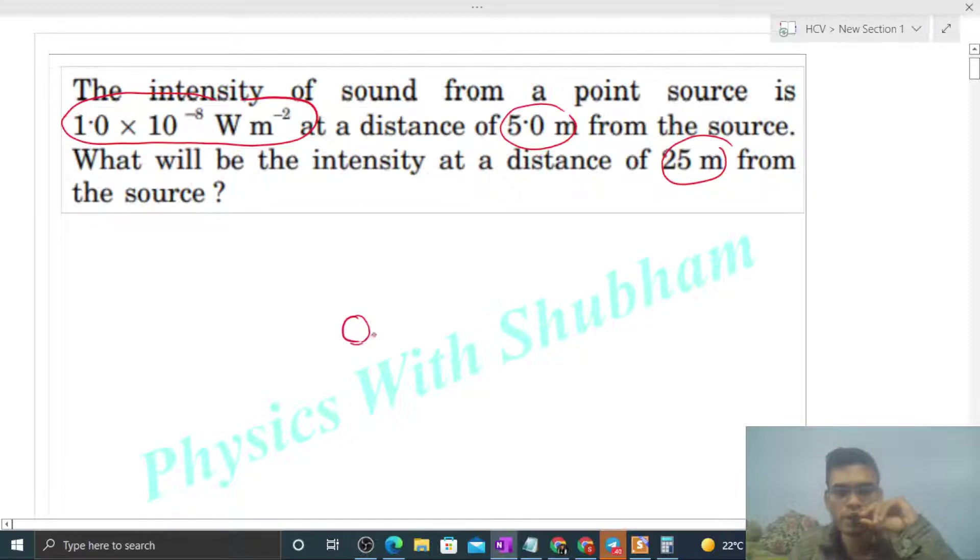So what is given? We have a point source, and at a distance of 5 meters, intensity is given as 10 raised to the power minus 8 watt per meter square. So you can find out the power of this point source.